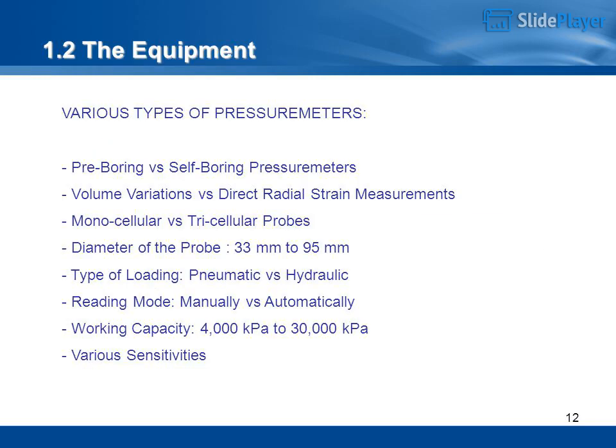The equipment includes various types of pressuremeters: pre-boring versus self-boring, volume variations versus direct radial strain measurements, monocellular versus tricellular probes. Probe diameter ranges from 33 mm to 95 mm. Type of loading: pneumatic versus hydraulic. Reading mode: manual versus automatic. Working capacity: 4,000 kPa to 30,000 kPa.